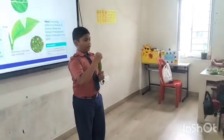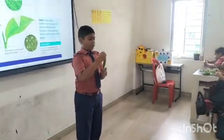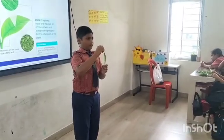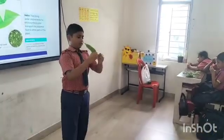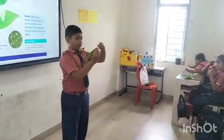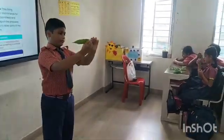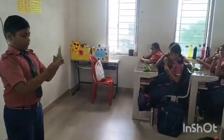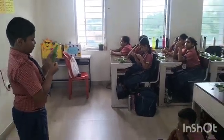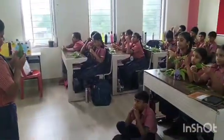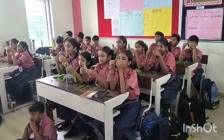Today we are learning about parts of the leaf. This is the tip of the leaf, this is the edge of the leaf, and this is the blade of the leaf, and these are the veins — they are small.